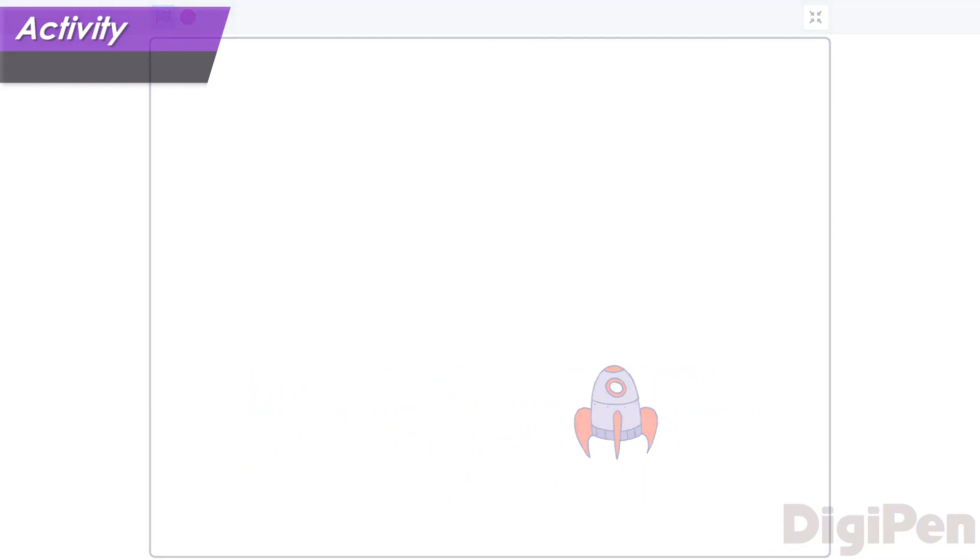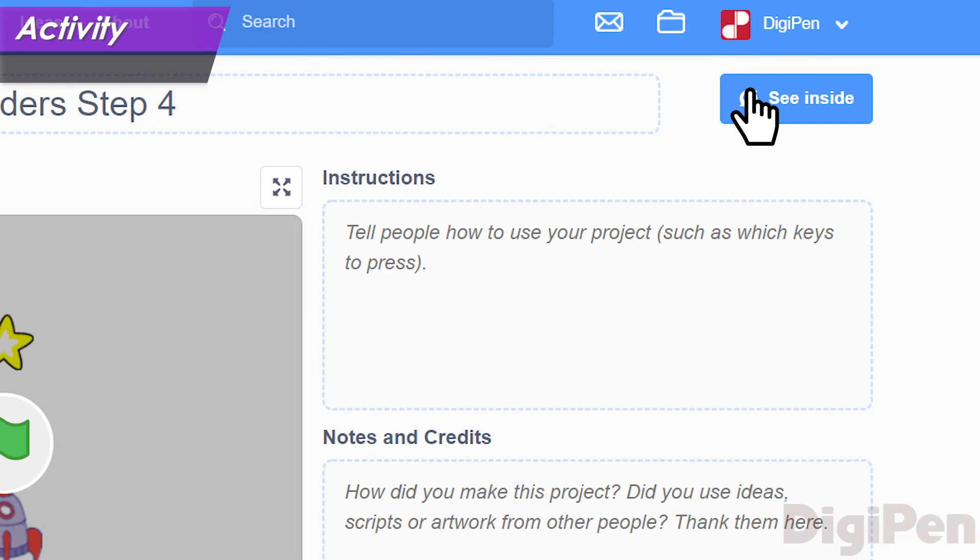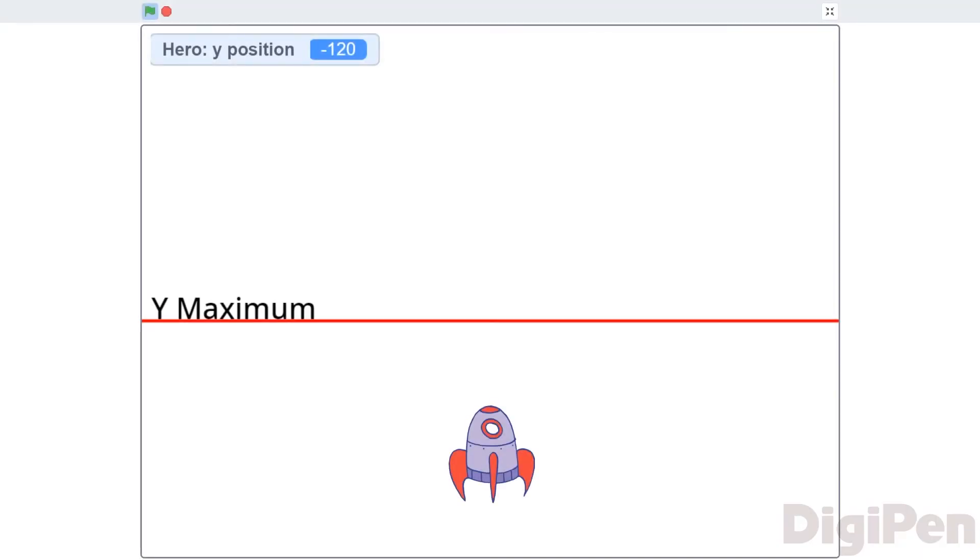In many space shooters, the hero is not free to move wherever they like. Instead, they are restricted to moving within a set of boundaries. Let's apply our new knowledge to our Scratch Invaders game and implement a boundary checking system. Load what you've already done in that project, or visit the link in the description below, and then click the See Inside button.